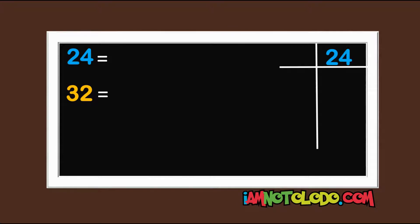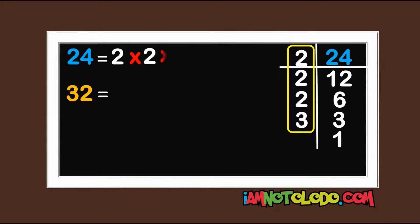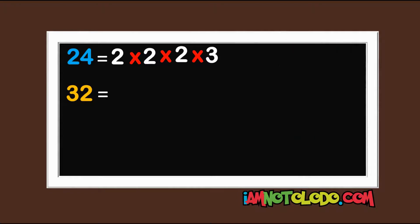So 2 in 24 is 12, 2 in 12 is 6, 2 in 6 is 3, and 3 in 3 is 1. So let's write these numbers: 2 times 2 times 2 times 3.